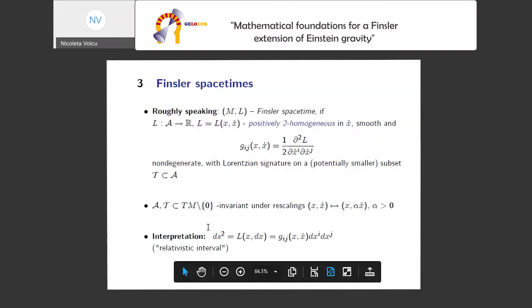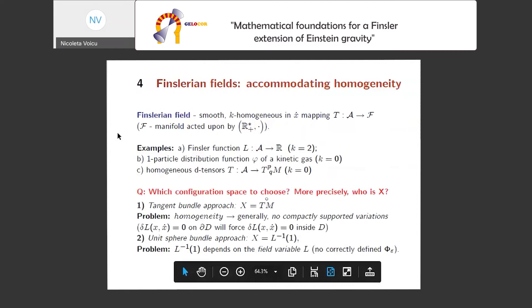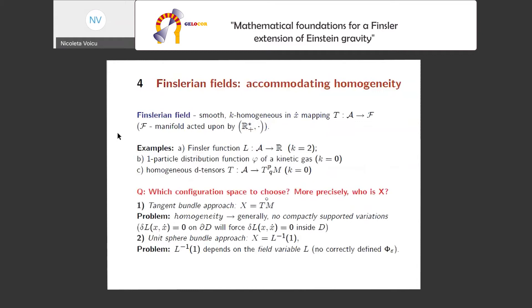This is our interpretation of L, roughly speaking. Our point is: we want to build a field theory which has L, or the metric tensor G, as our dynamical variable. The key issue, which might not be obvious at first glance, is that they are homogeneous functions, and that constrains us. So we really have to think about how to accommodate homogeneity.